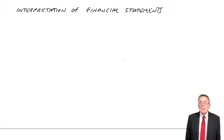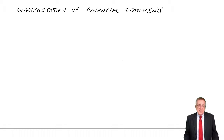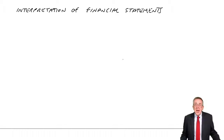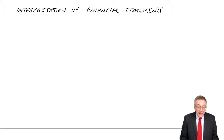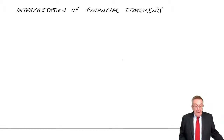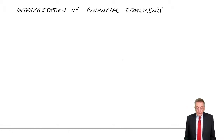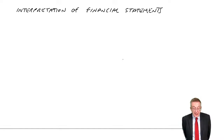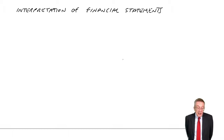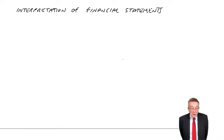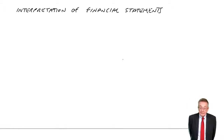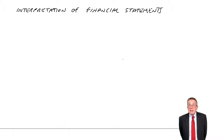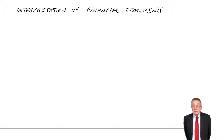And finally, something called gearing, which is looking at how a company has raised its money. If a company needs money, they can issue shares or they could have long-term borrowing. To show you what I mean and to go through the various measures, look at example one, where I've given you the statements of financial position for 2010 and the previous year 2009. And I've also given you the statements of profit and loss for the two years. We're going to look at the various ratios you could be asked for each of profitability, liquidity, and gearing.